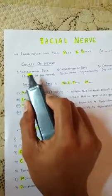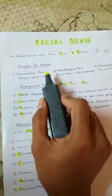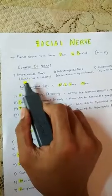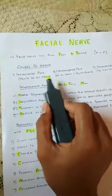Now, the course of the nerve can be divided into three parts. The first is intracranial, which extends from pons to internal acoustic meatus.